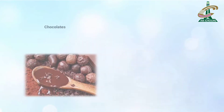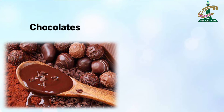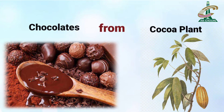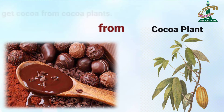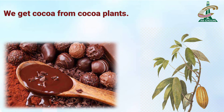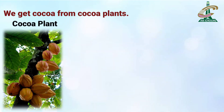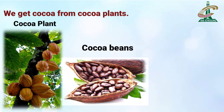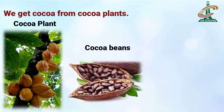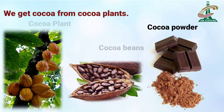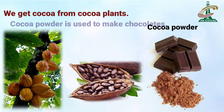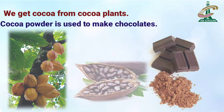And do you know, students? آپکے chocolates بھی plants سے ملتے ہیں. We get cocoa from the cocoa plant. Cocoa plant سے ہمیں cocoa beans ملتے ہیں. اسی طرح اسکو dry کرکے factories میں grind کیا جاتا ہے، cocoa powder بنایا جاتا ہے. Then cocoa powder is used to make chocolates.